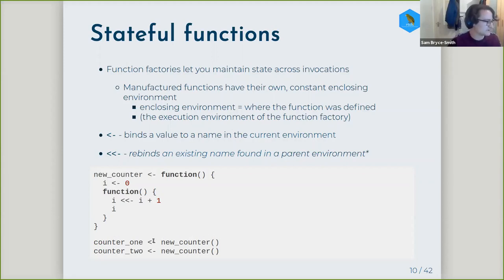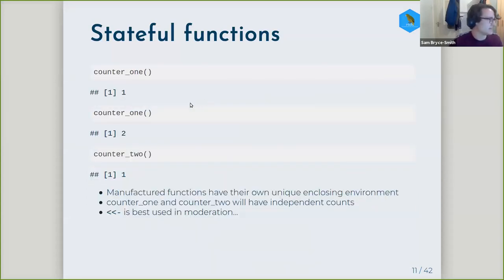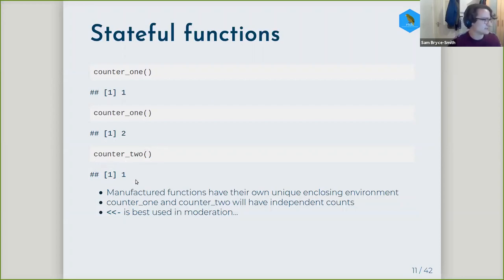For example, if you created two separate counters using this function — counter_one and counter_two — and called these functions a different number of times, here I've called counter_one twice, and we can see we've kept track of how many times it's been invoked. But counter_two I've only called once. This reiterates the point that manufactured functions have their own unique enclosing environment, so different manufactured functions will have independent counts.